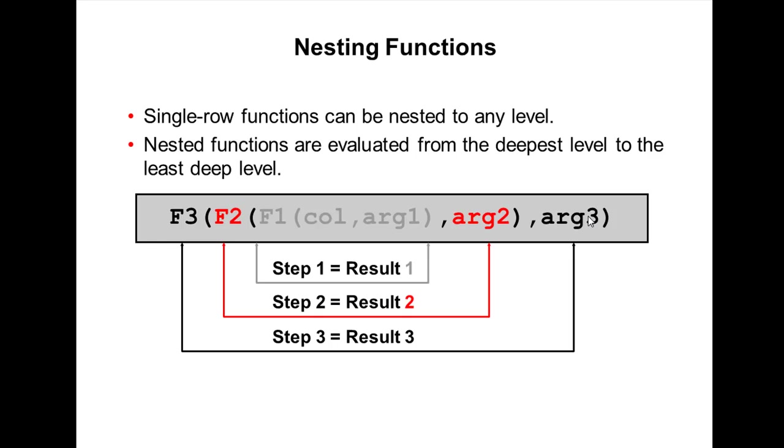So whatever value we are getting from this, from this till here, it will take as the first argument and argument two. And whatever value you are getting from this, it will take as the first argument of F3, and it will review the result.